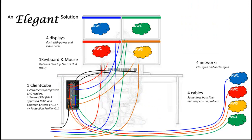The ClientCube presents an elegant alternative. We've still got the same four networks and four cables coming to the single ClientCube device, but we've got four zero clients embedded with this secure KVM and still the two display cables for each of the four displays. With the ClientCube, you only have to deal with seven external cables — all the internal zero client to secure KVM comes preassembled from the factory. The prior four-desktop solution has 16 cables you personally have to connect. That's about 60 feet less cable between the ugly and the elegant solution.